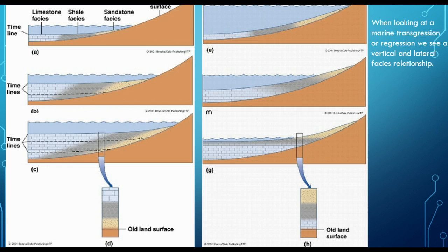Here we have an example of how a transgression on the left and a regression on the right would create different facies situations. We see at the top, the limestone facies forming in deep water. As we come inland, we move towards shallow water where we see a shale facies forming. Moving closer to the land, we see a sandstone. If we moved even further inland, we might see conglomerates, which would be unconsolidated material deposited by a stream or river.